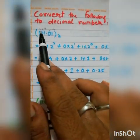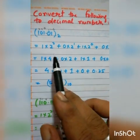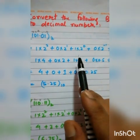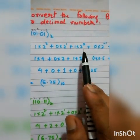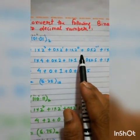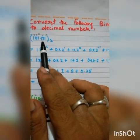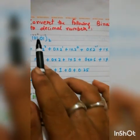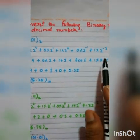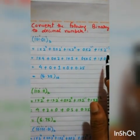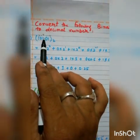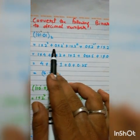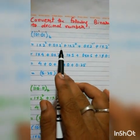Each binary digit you multiply with the base raised to the given power. So: 1 × 2² , then 0 × 2¹, then 1 × 2⁰. Then after the decimal: 0 × 2⁻¹ plus 1 × 2⁻². This is the first step — assign powers. The second step is to multiply each bit by 2 to the given power.